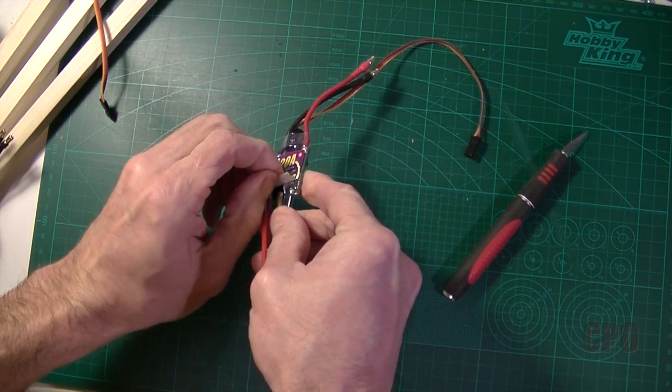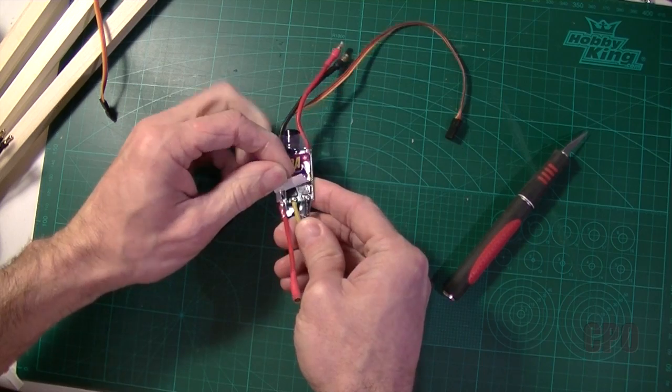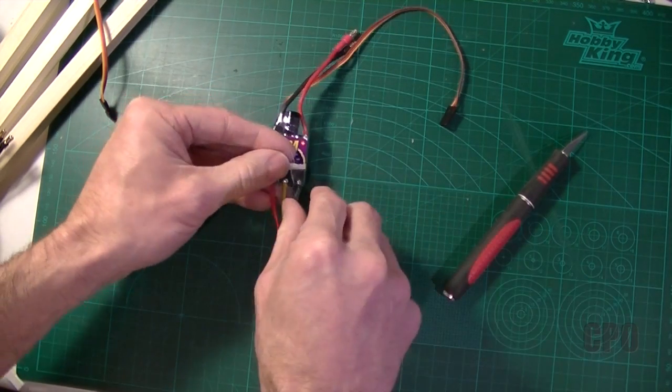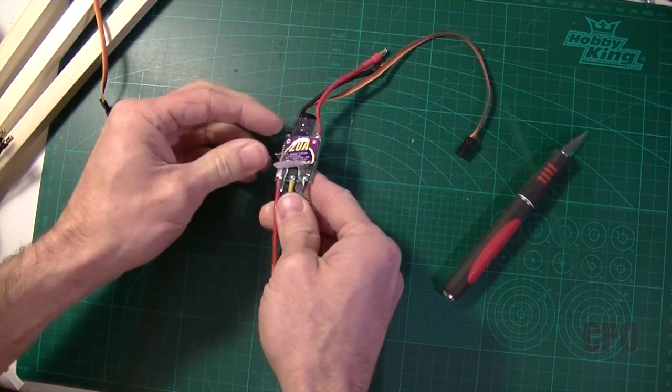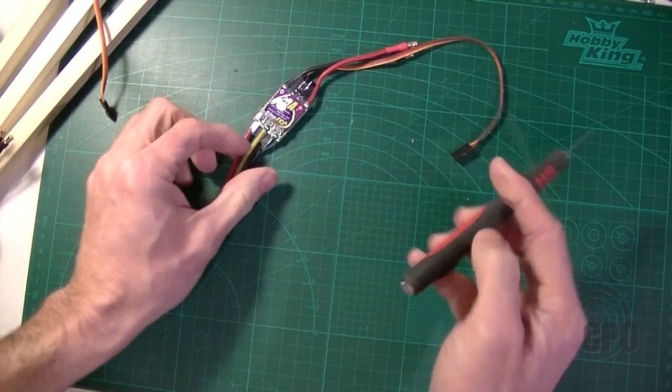So the first thing I need to do is get the plastic wrapper off of the ESCs. And originally I was trying to just leave the label and pull the plastic up and cut it around where I could get to the motor wires.